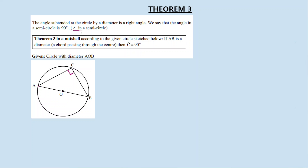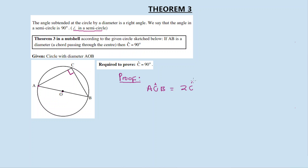When doing calculations involving Theorem 3, we use the reason 'angle in a semicircle.' Theorem 3 in a nutshell: angle C is equal to 90 degrees because a diameter AOB subtends a 90-degree angle. We are required to prove that angle C is in fact 90 degrees. We use Theorem 2, because Theorem 3 is a special case of Theorem 2.